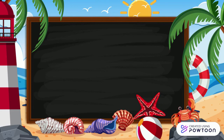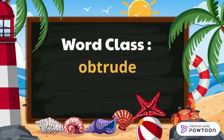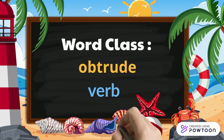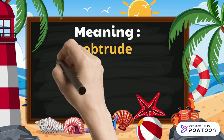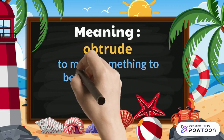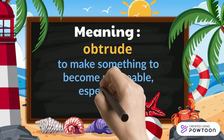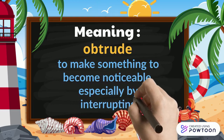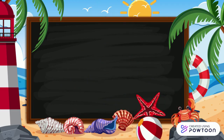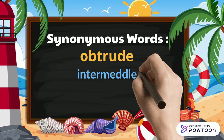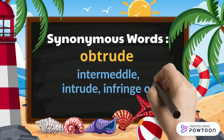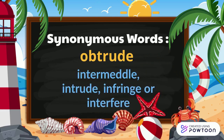The word 'obtruth' is a verb. The meaning of the word obtruth is to make something become noticeable, especially by interrupting. Other synonymous words for obtruth are intermedial, intrude, infringe, or interfere.